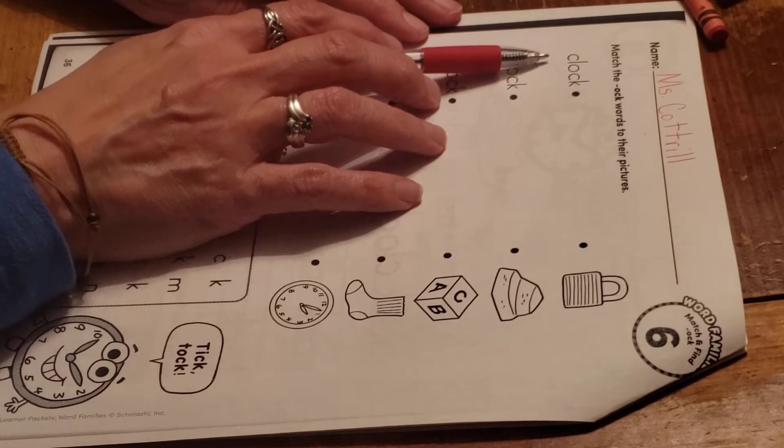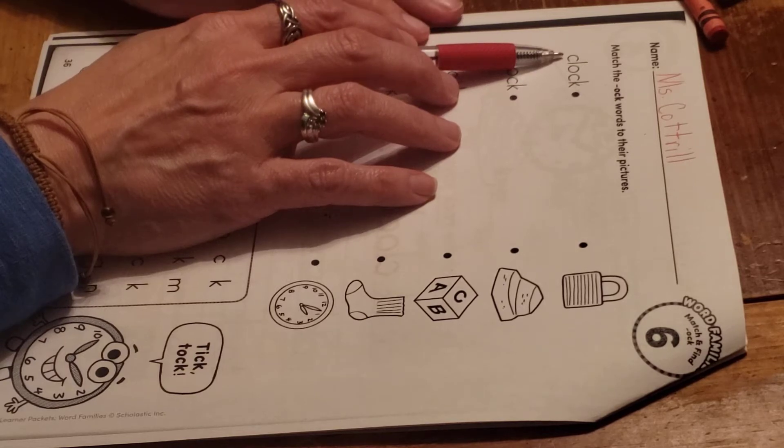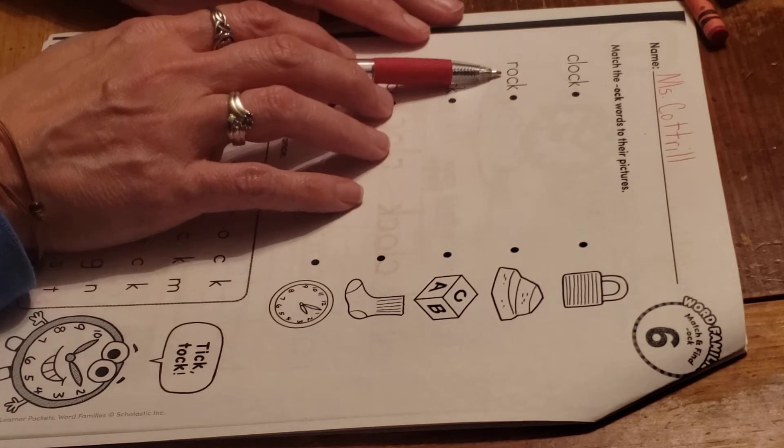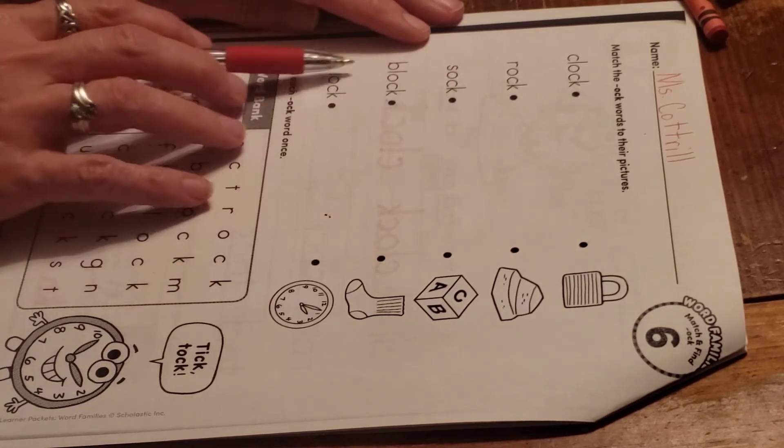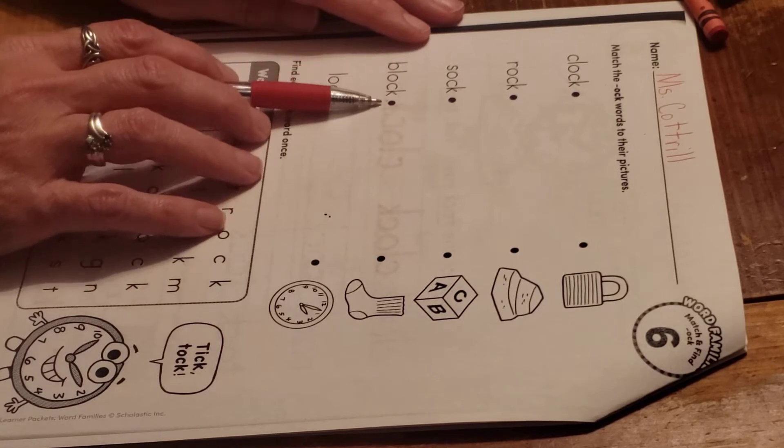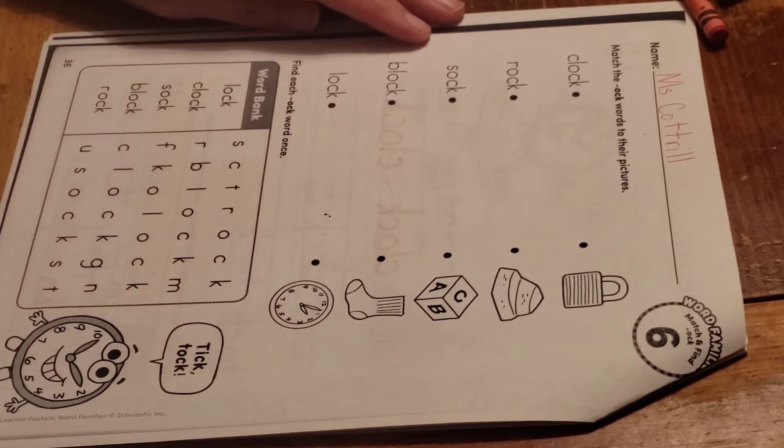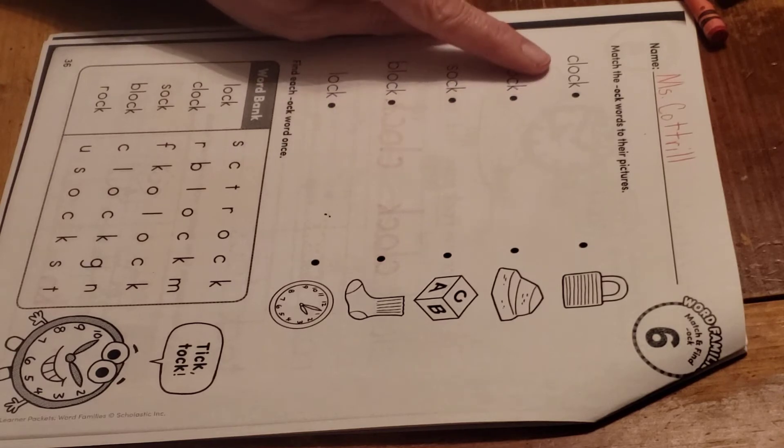Clock, rock, sock, block, lock. Say them slowly first, then say them quickly and match the word to the correct picture.